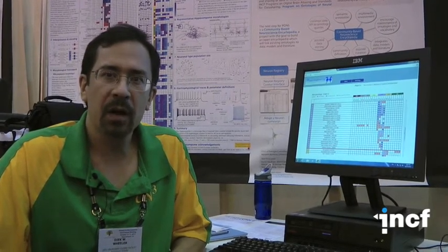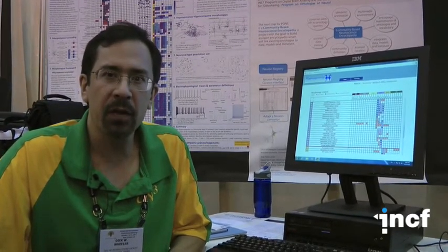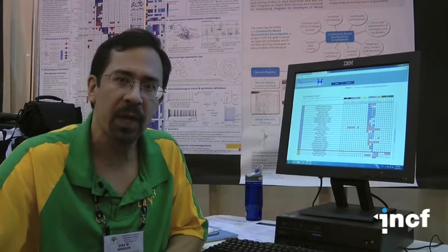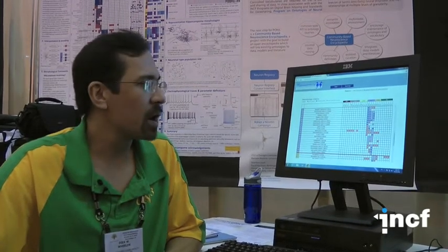We're putting together the hippocampome, which is a knowledge base of the hippocampus for adult healthy rodents. We're starting with a catalog of the different neuronal types that one finds in the hippocampus, and our type definition is based on morphology.